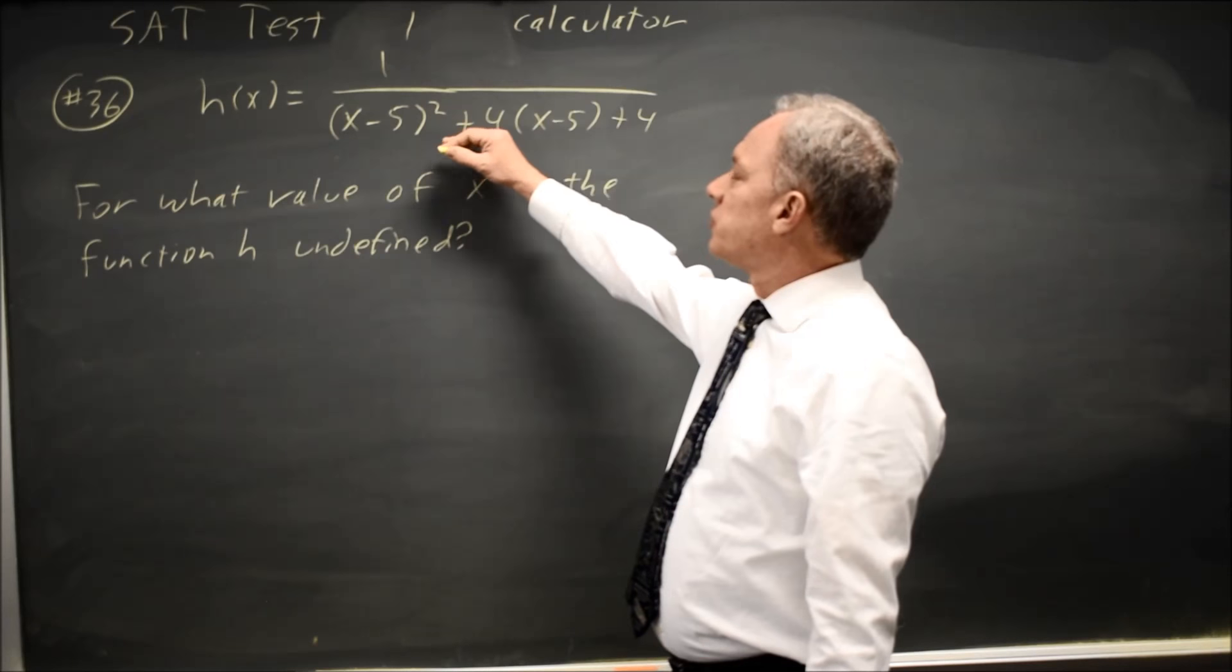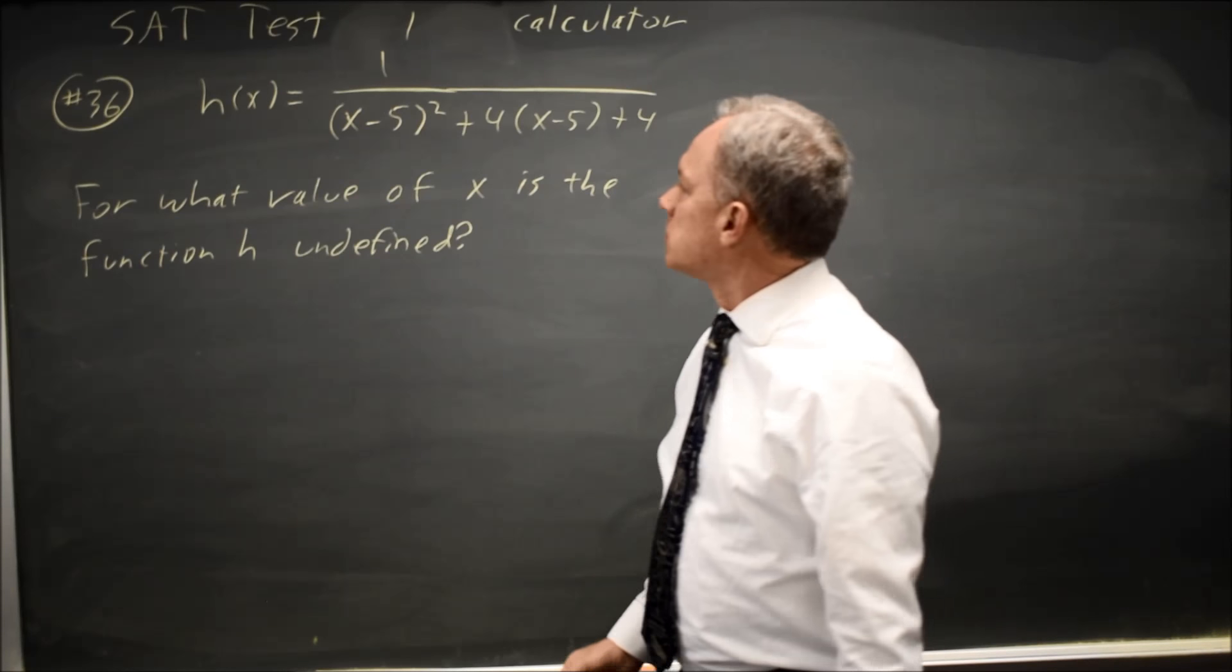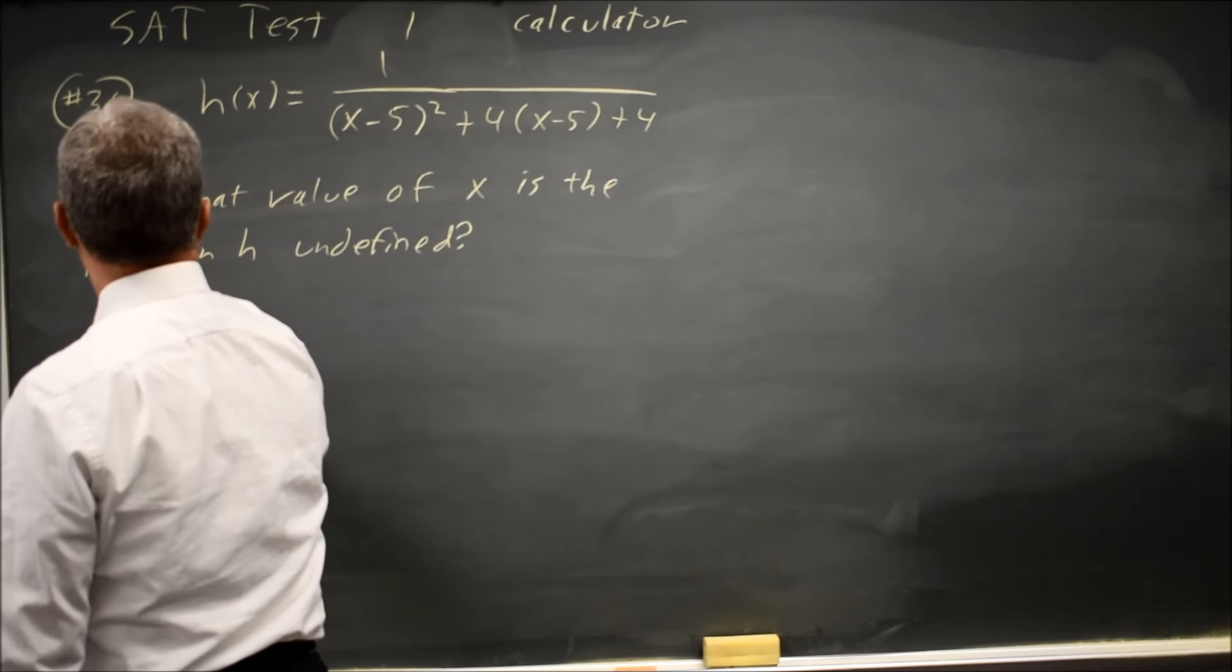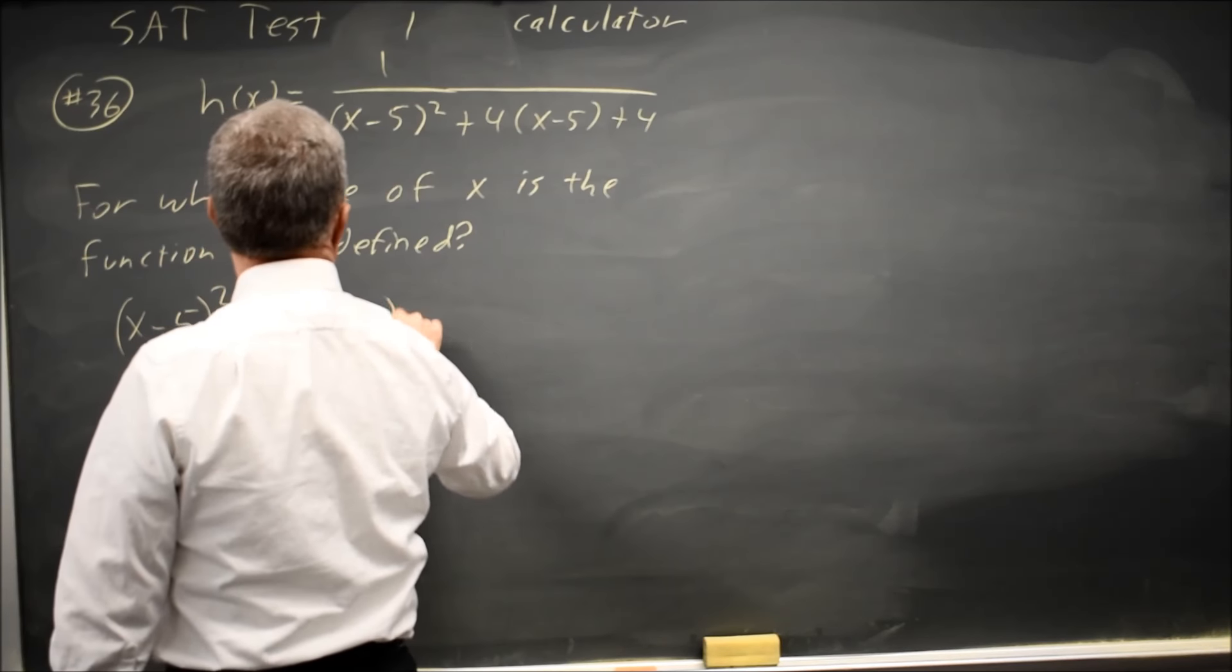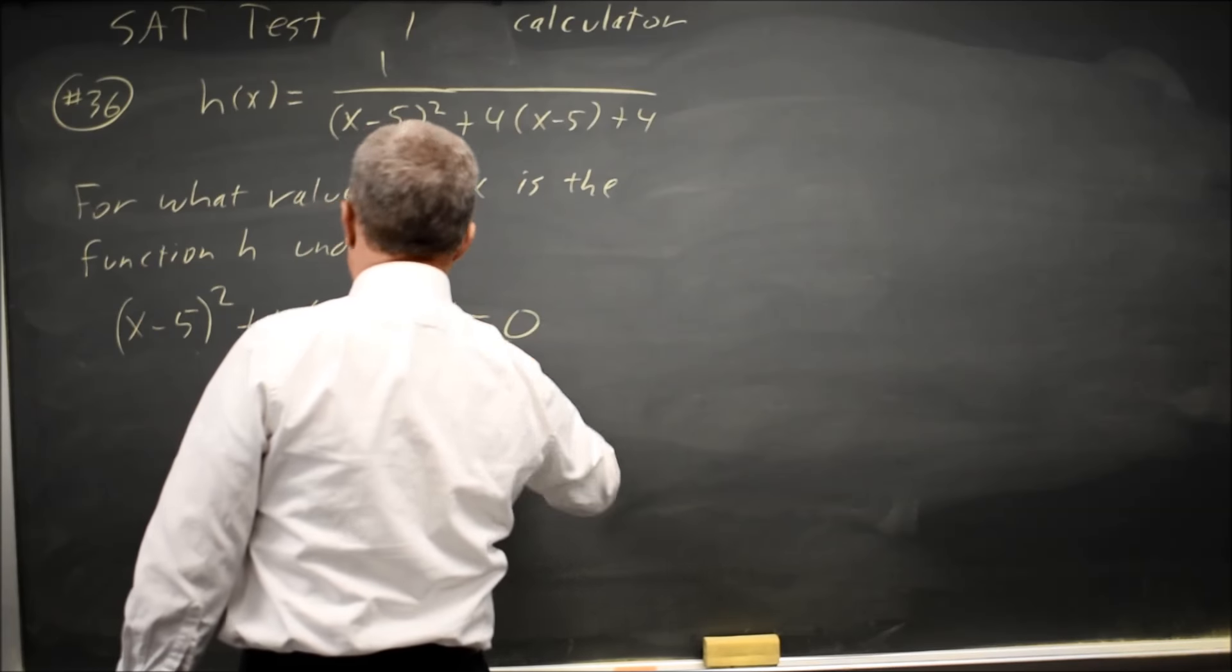Rational expressions are undefined when you're dividing by 0, so I'm going to set the denominator equal to 0. (x - 5)² + 4(x - 5) + 4 = 0.